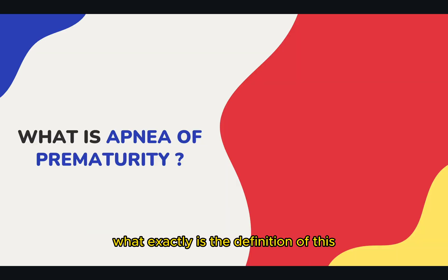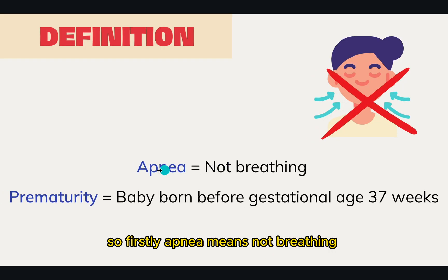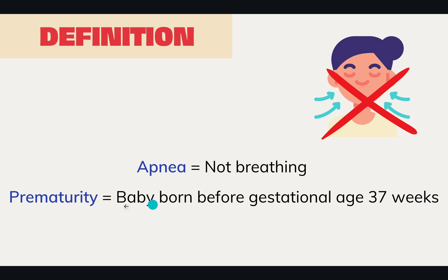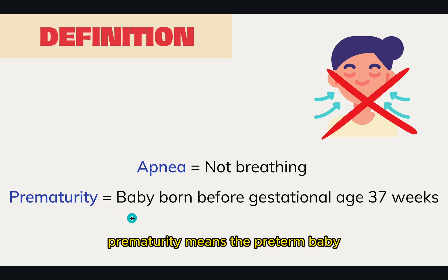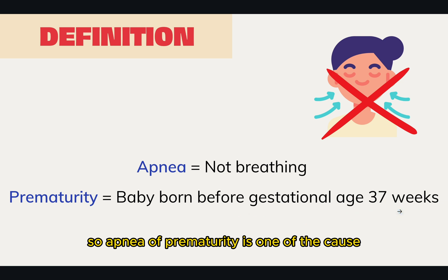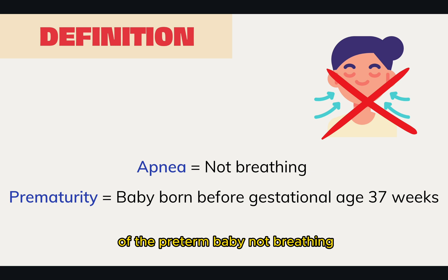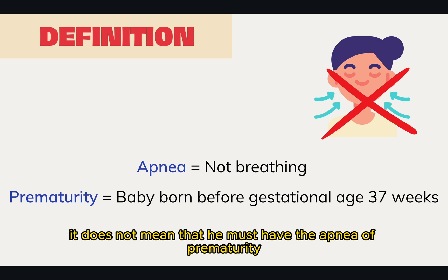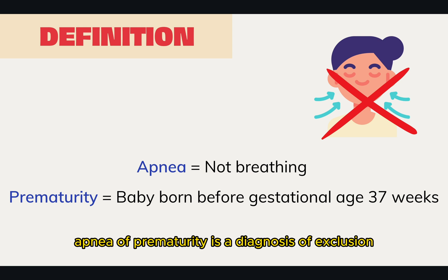So what exactly is the definition of that? We can know from the name. Apnea means not breathing. Prematurity means the preterm baby, which is defined as the baby born before gestational age of 37 weeks. So apnea of prematurity is one of the causes of the preterm baby not breathing. If the preterm baby has apnea, it does not mean they must have apnea of prematurity. Apnea of prematurity is a diagnosis of exclusion.